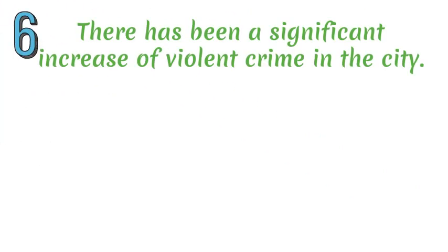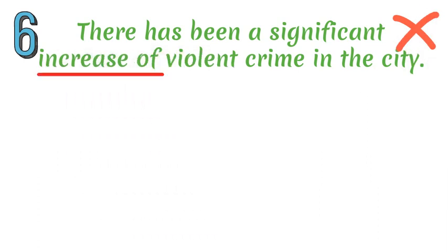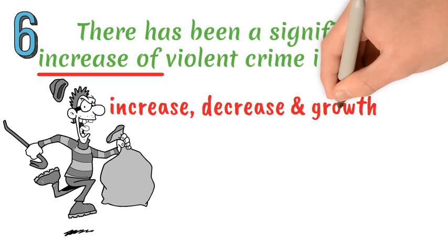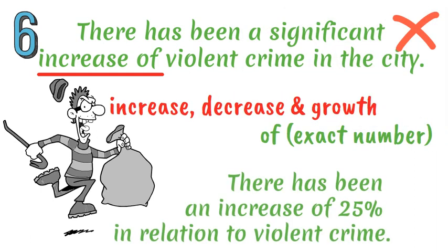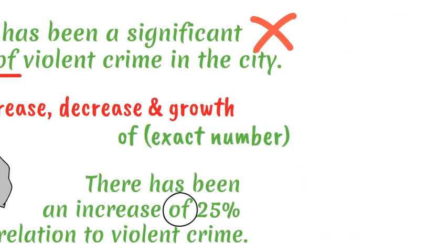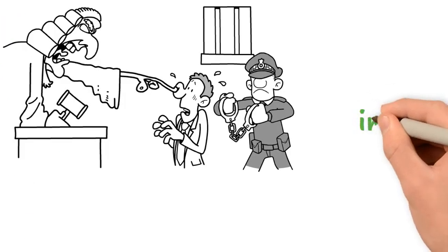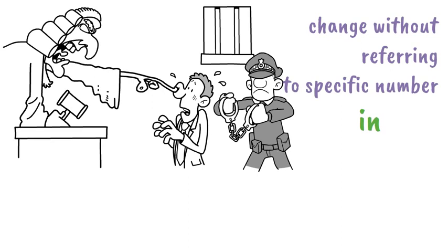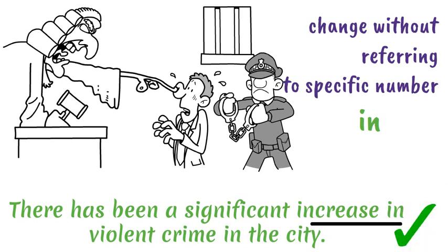Mistake number six. We use the preposition 'of' after nouns like 'increase', 'decrease', and 'growth' when we want to specify the exact number. However, with these kinds of nouns, we use the preposition 'in' to describe a change that is measurable without referring to the specific number or percentage. For example: 'There has been a significant increase in violent crime in the city.'